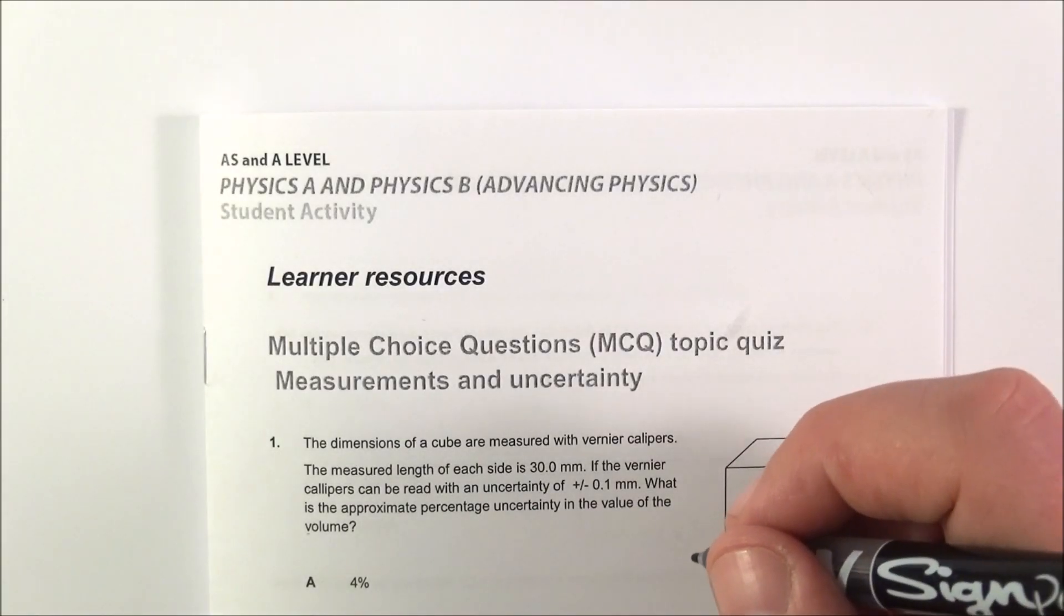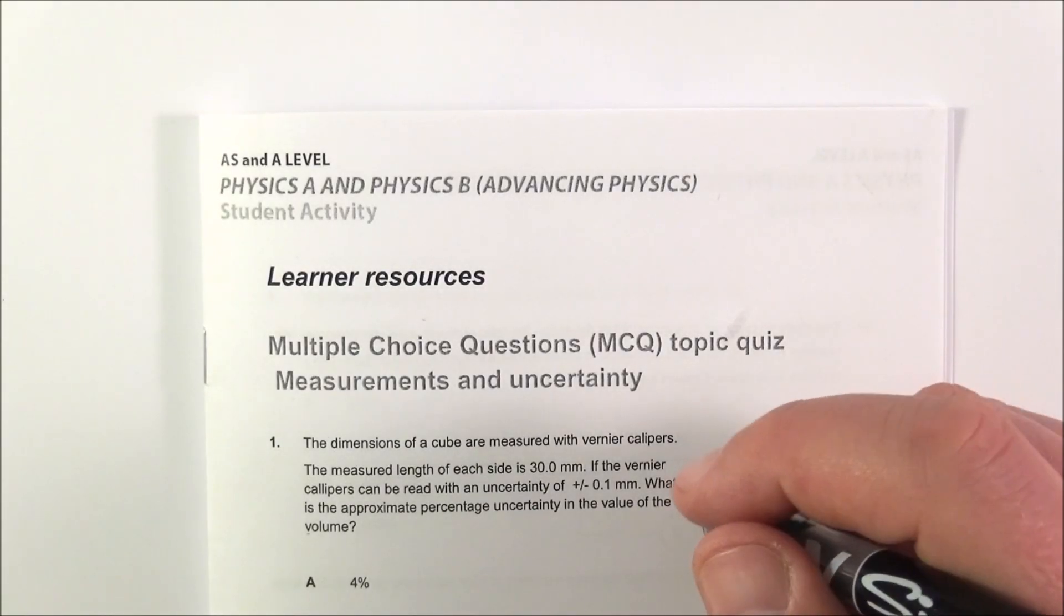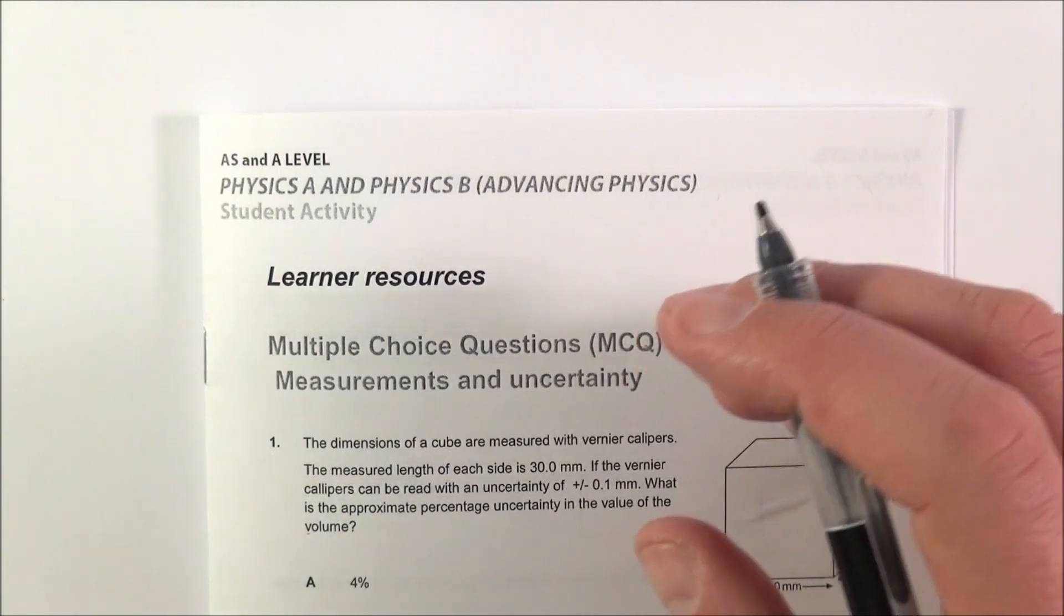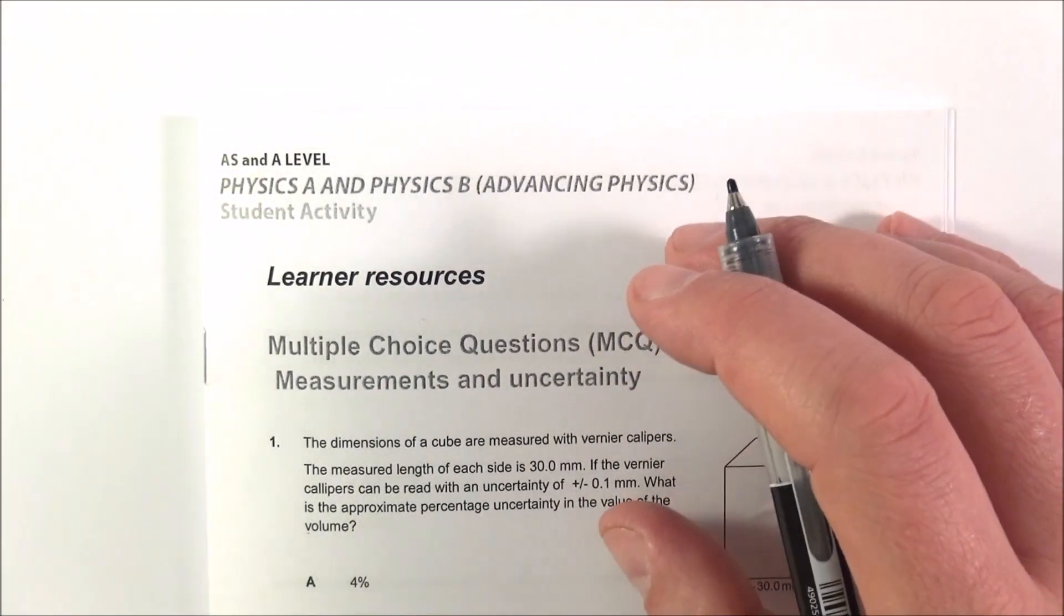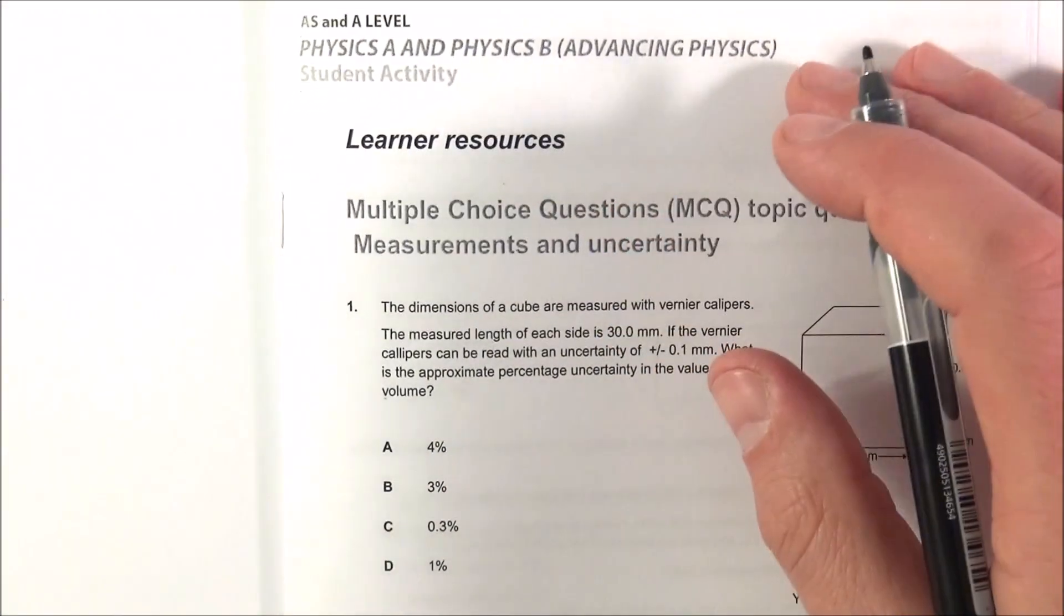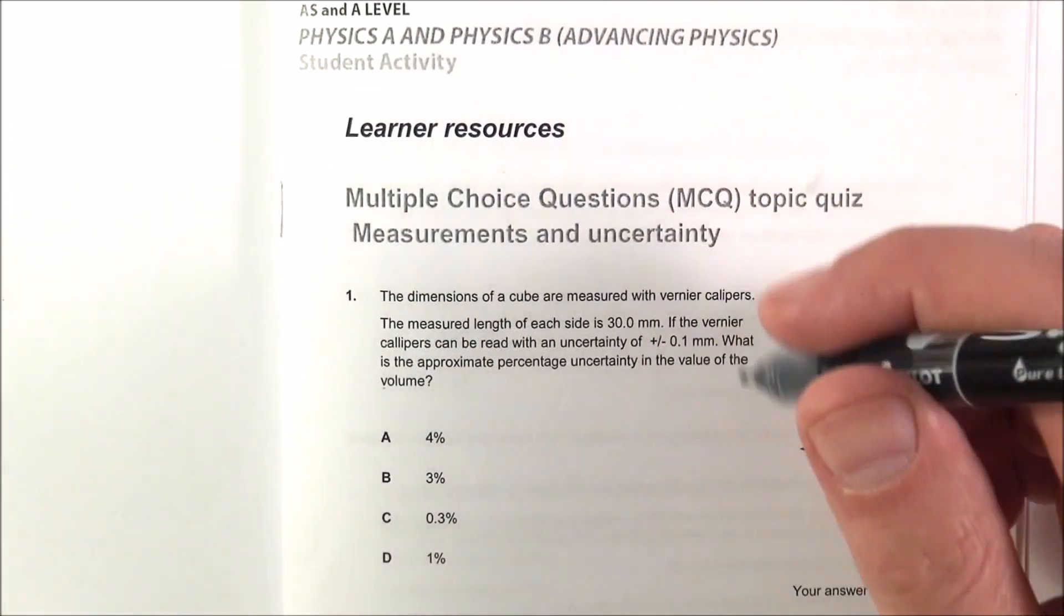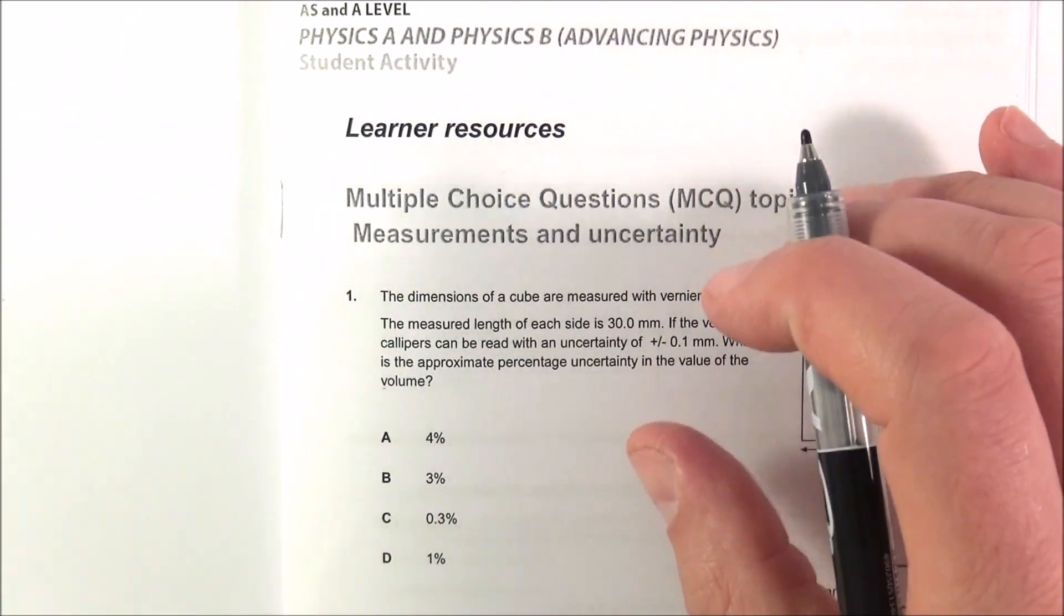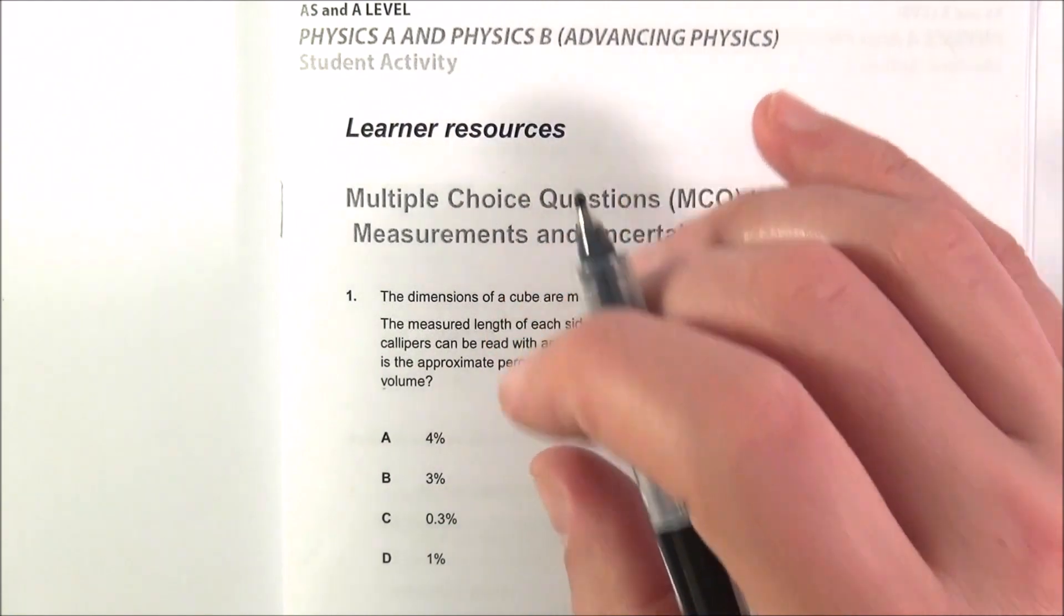On the OCR breadth in physics paper, the first 20 marks are all multiple choice and this should take you about 25 minutes. The thing about multiple choice is they can test a wide range of the physics course and they're not always that easy. Don't think that just because they're multiple choice it can be easy questions.